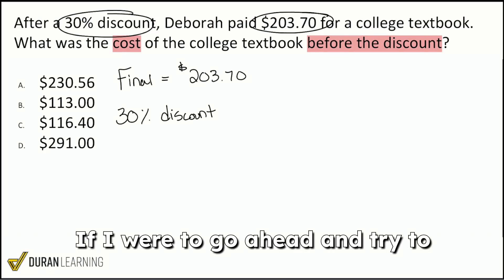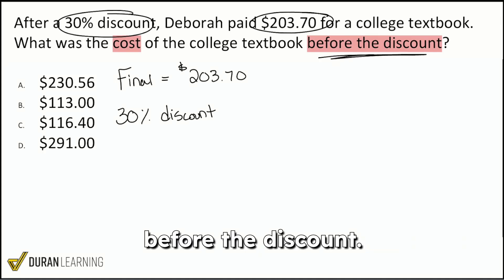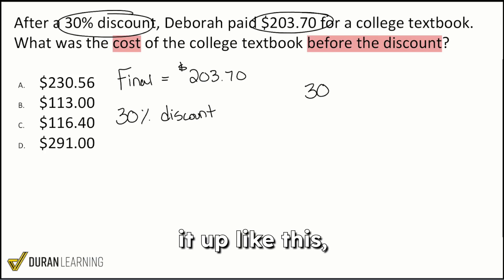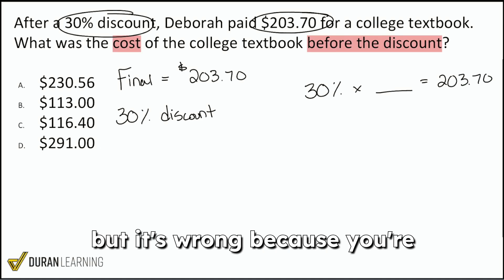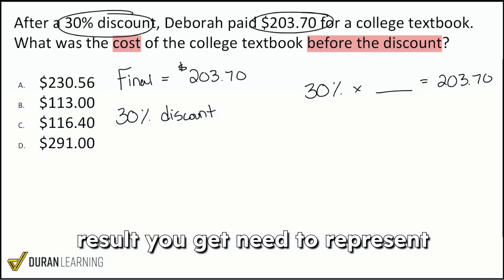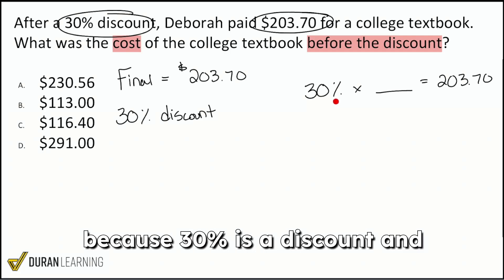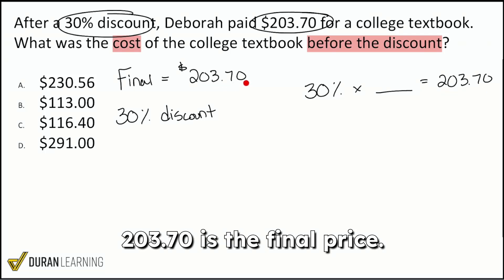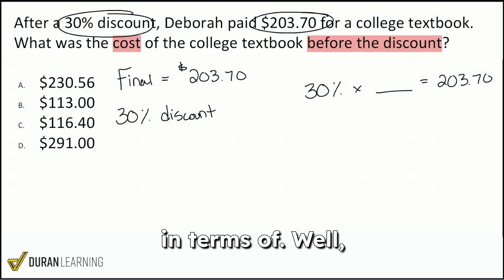Here's the problem: if we tried to set it up as 30% times the original number equals $203.70, most people try to set it up this way, but it's wrong because you're not following that principle. The percent you apply and the result you get need to represent the same exact idea. And it doesn't here, because 30% is a discount and $203.70 is the final price — these don't represent the same thing.